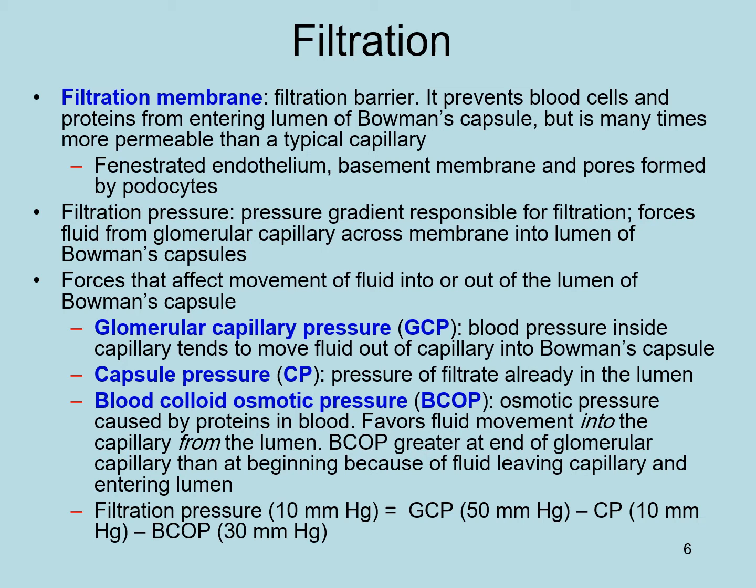Red blood cells cannot cross because they are too large relative to the pores and slits in the filtration membrane. Proteins also cannot cross — first because they are large molecules, and second because they carry a negative charge. The three filtration membranes are coated with negative charges, which repel proteins because proteins are also negatively charged.